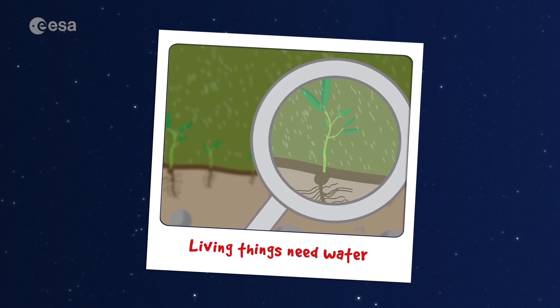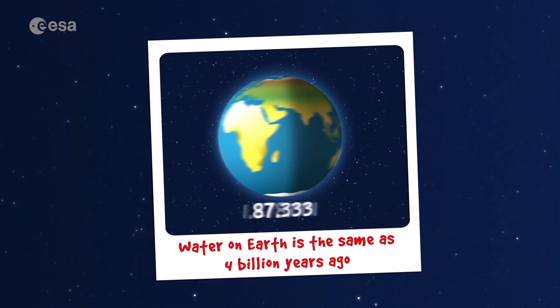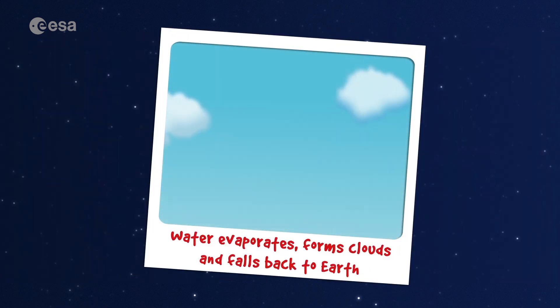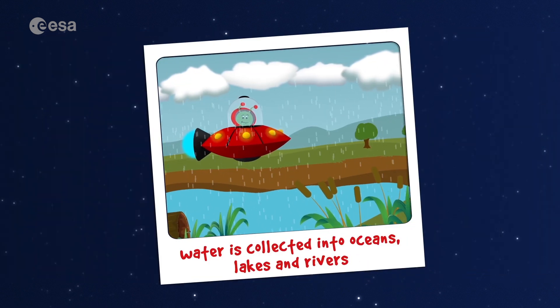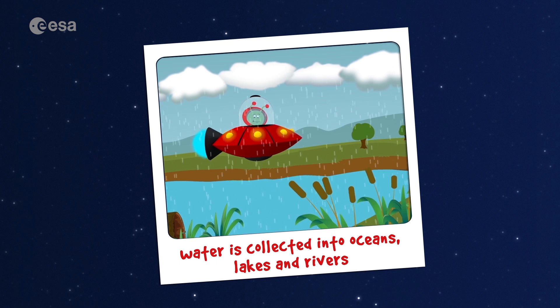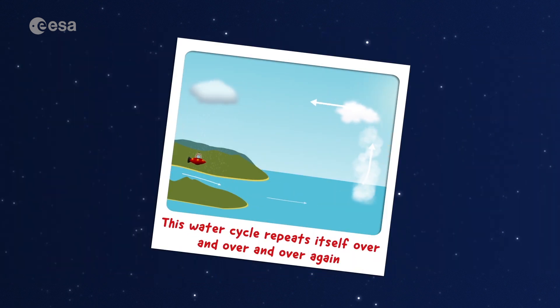So, today we learned that every living thing needs water to survive. Water on Earth has been the same for 4 billion years. Water evaporates, forms clouds and then falls back to Earth. It's collected into oceans, lakes and rivers, and it keeps on recycling itself over and over again.